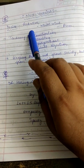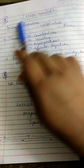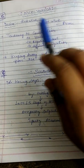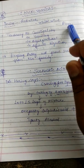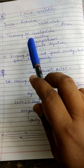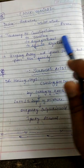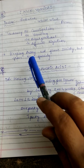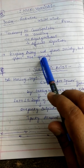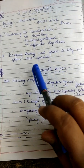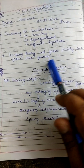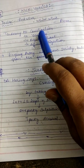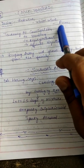Nux Vomica — desire for red wine, white wine, and rum. Nux Vomica mein sedentary life hoti hai; desire batai hai red wine, white wine, and rum. Tendency to constipation, tendency to vomiting, tendency to regurgitation, tendency to difficulty in digestion. Keeping away not from society but from the family — patient society se toh kaafi paas rehta hai, but family se paas nahi rehta.